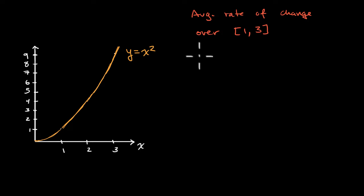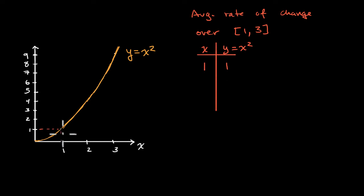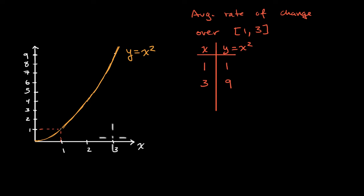We could do this even without looking at the graph. If I were to just make a table here where this is x and this is y equals x squared: when x is equal to one, y is equal to one squared, which is just one — you can see that right over there. And when x is equal to three, y is equal to three squared, which is equal to nine.